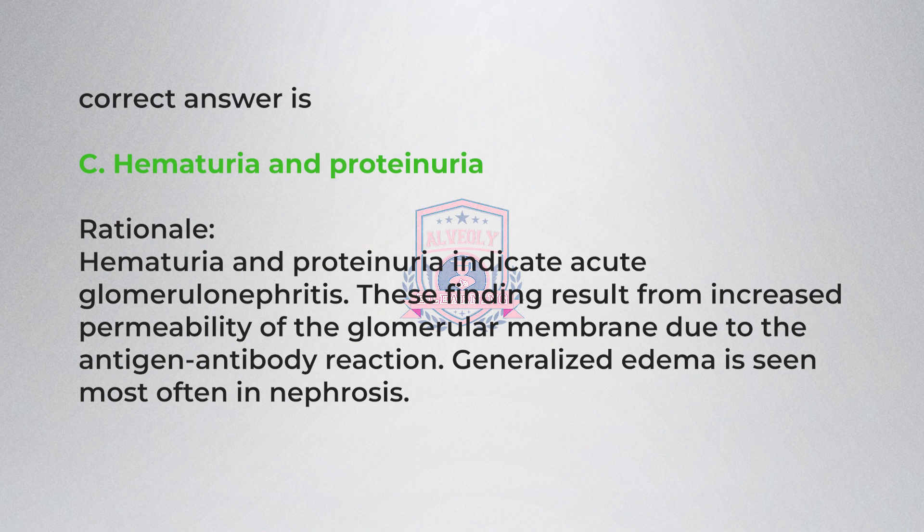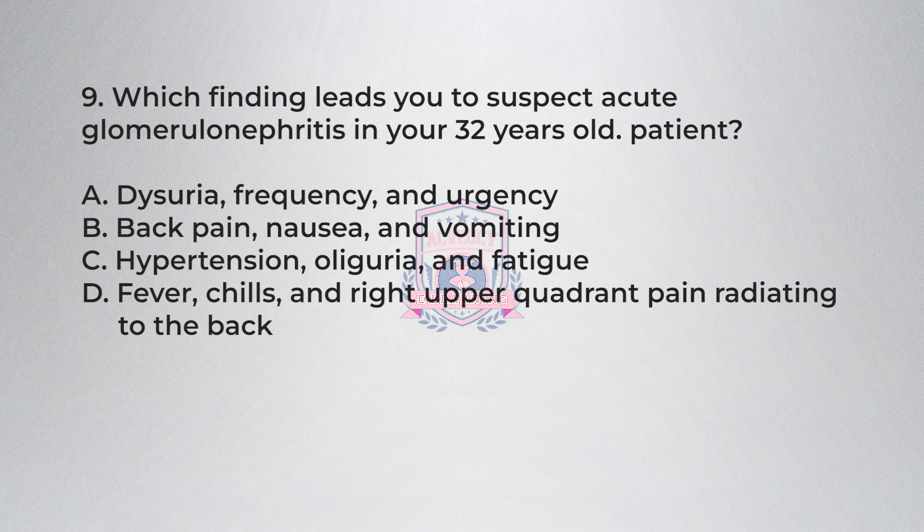Rationale: Hematuria and proteinuria indicate acute glomerulonephritis. These findings result from increased permeability of the glomerular membrane due to the antigen-antibody reaction. Generalized edema is seen most often in nephrosis.